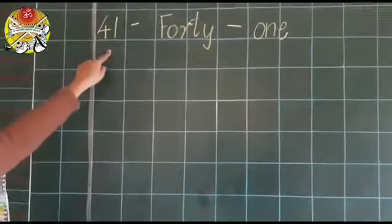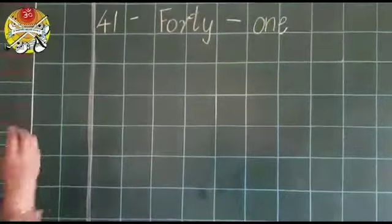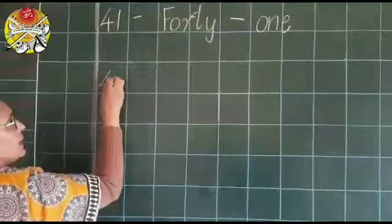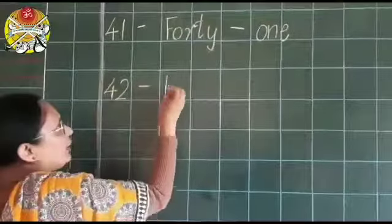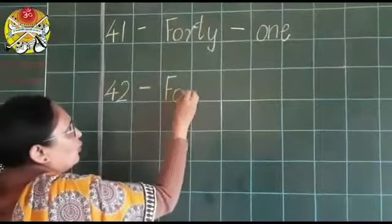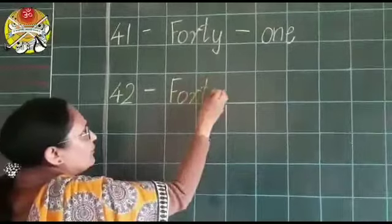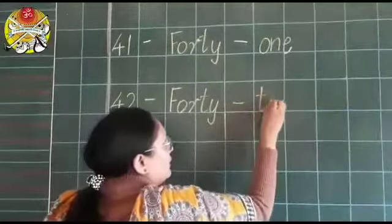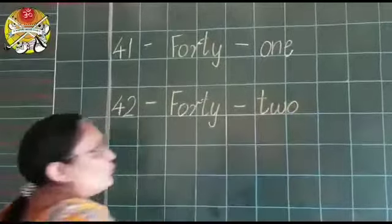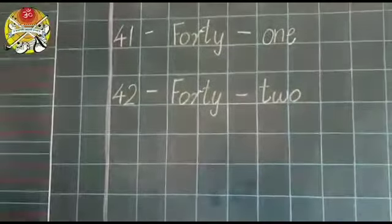Now, we will leave one square and write the next number and its number name. That is 42 dash F-O-R-T-Y, 40 dash T-W-O, 2. 42.